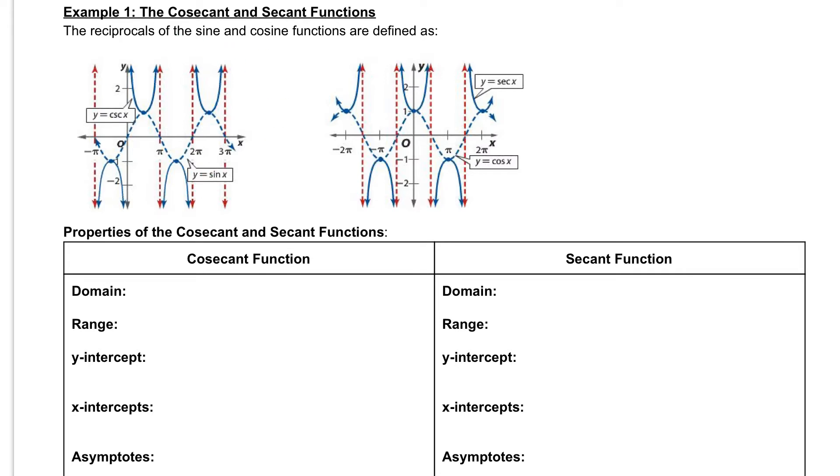And our cosecant graph is this part here. So we've got these U shapes going up and going down. And notice that those U shapes are happening at those maximum or minimum points of your sine function.